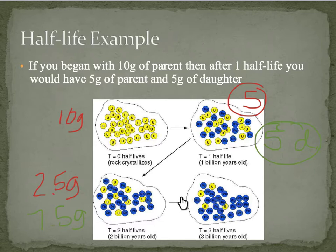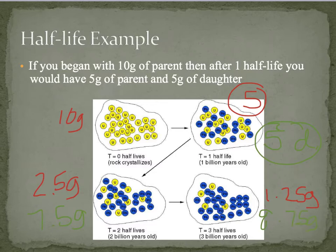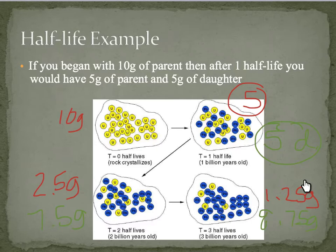Going through one more half-life: half of 2.5 is 1.25 grams of parent, which gives us 8.75 grams of daughter. Notice that since we started with 10 grams, we can never have any more than 10 total — 5 plus 5 equals 10, 2.5 plus 7.5 equals 10. You're just cutting the parent number in half each time.